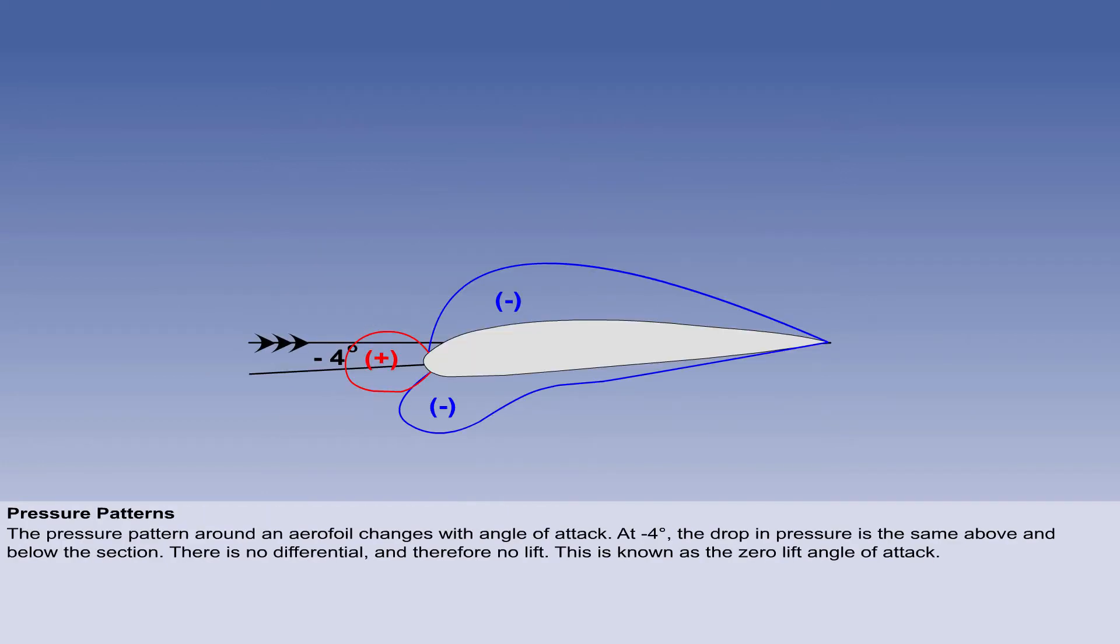We can now examine what happens to the pressure pattern as the angle of attack changes, starting with low angles. With an alpha of minus 4 degrees, the drop in pressure is the same above and below the section. There is no differential, and therefore no lift. This is known as the zero lift angle of attack.